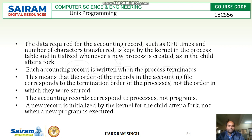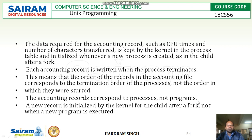If a process has been created later but got terminated early, then its accounting record will be created first. If process A has been created first and process B second, but process A terminated late, then the accounting record of process A will be created later. The accounting records correspond to processes, not programs — a process accounting record corresponds to the process, not the program.